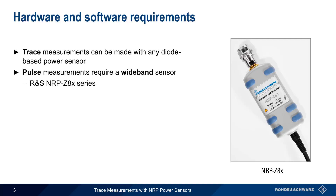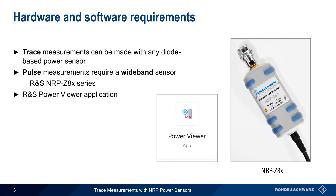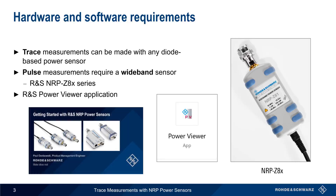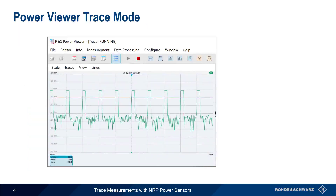In this presentation, we'll be configuring the sensor and generating traces using the Power Viewer software application. If you're unsure about how to install or use Power Viewer, step-by-step instructions can be found in the presentation 'Getting Started with Rohde & Schwarz NRP Power Sensors.' You should already be familiar with the more common continuous average power measurement in Power Viewer.